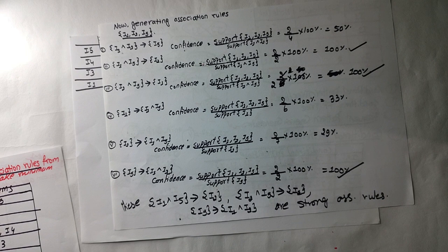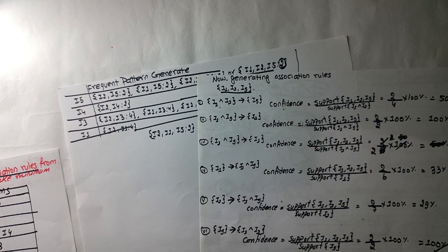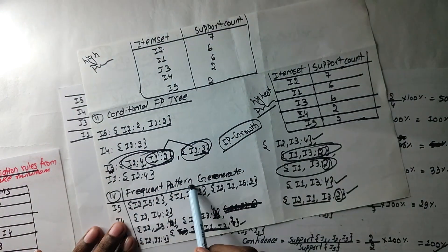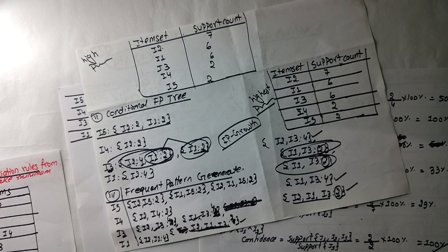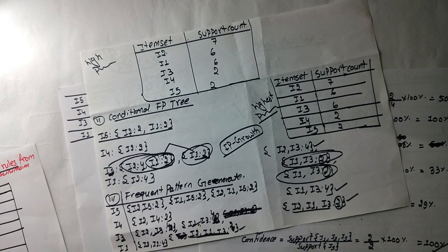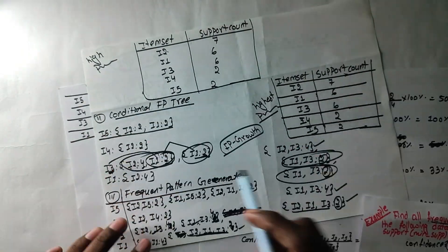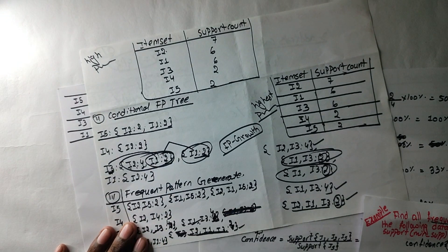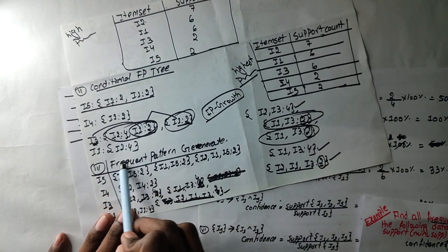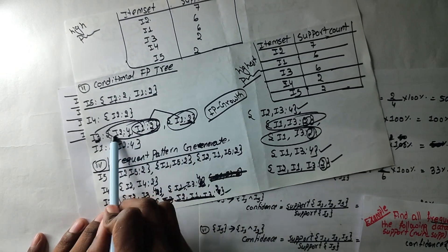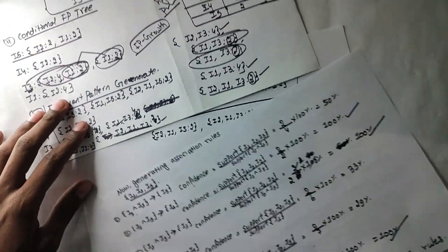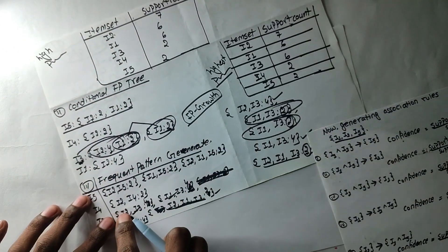So we need to know the main — what we need to know. We need to know the conditional FP-tree, or frequent pattern generator. We need to know the minimum value, but we need to compare the minimum support. We need to be able to find out — we need to take a test. In the frequent pattern generator, we need to take an explanation.